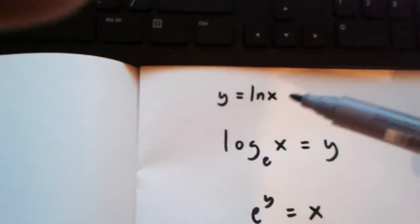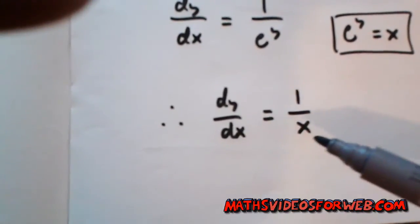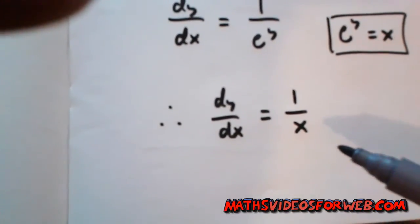So, if y is equal to ln x, dy over dx is equal to 1 over x.